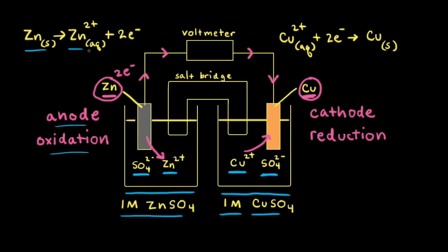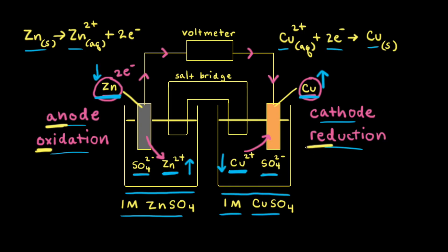The anode is where oxidation takes place, so solid zinc turns into zinc two plus cations. Over time, the amount of the solid zinc electrode will decrease and the concentration of zinc two plus cations in solution will increase. At the cathode, as copper two plus cations gain two electrons to become solid copper, the solid copper electrode will increase and the concentration of copper two plus ions in solution will decrease. A good mnemonic: an ox reminds us oxidation occurs at the anode, and a red cat reminds us reduction occurs at the cathode.